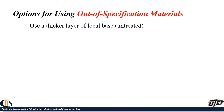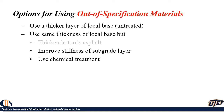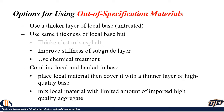The options we used for out-of-specification materials are as follows. The first was using a thicker layer of local base. The second was to improve the stiffness of the subgrade or use chemical treatment. The other group of options was to combine local and imported base — either place local material then cover it with a thinner layer of high-quality base, or mix the low-quality material with a limited amount of high-quality imported material to improve properties.